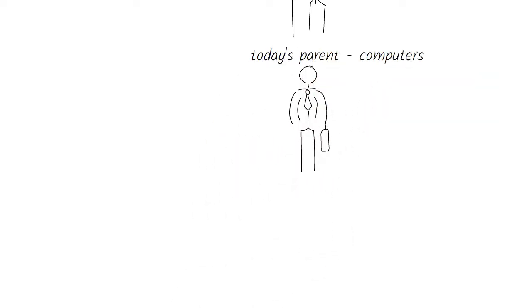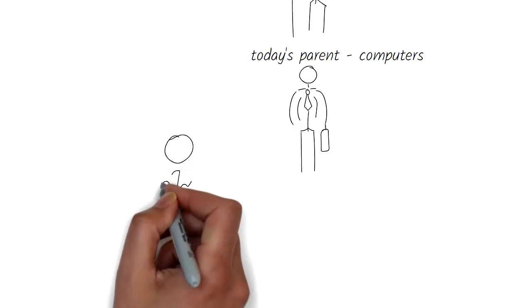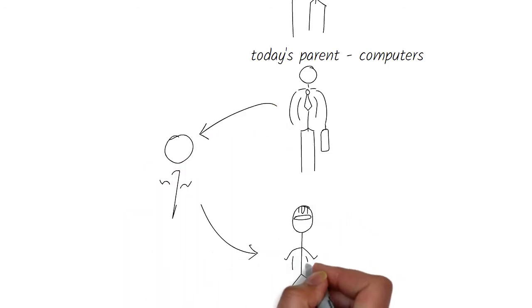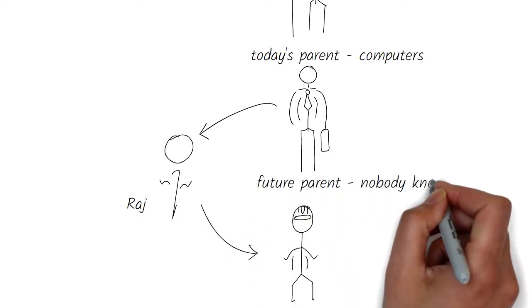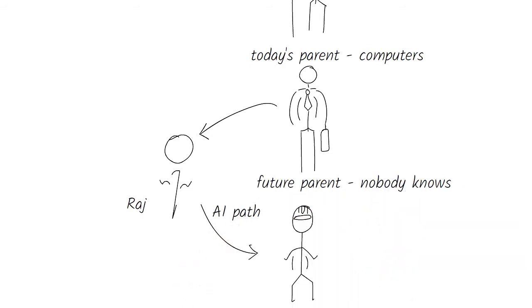And it also relies on the parent's definition of success. Many parents have asked me how their child can get into AI or artificial intelligence, because to them, AI is a path to success.